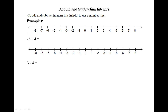Let's look at an example: minus two plus four. Place a dot on the minus two. Move four places to the right — one, two, three, four. The final answer is two.